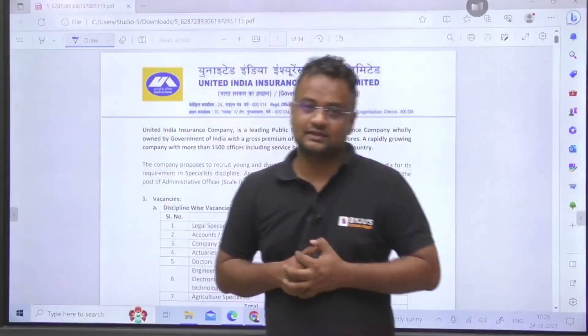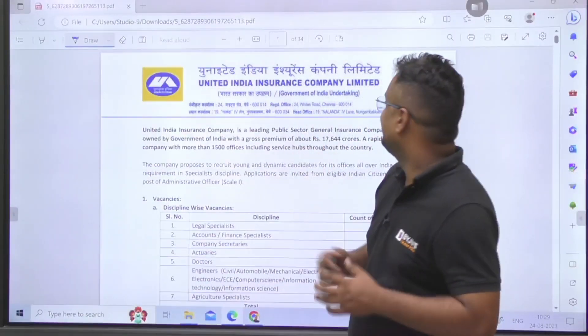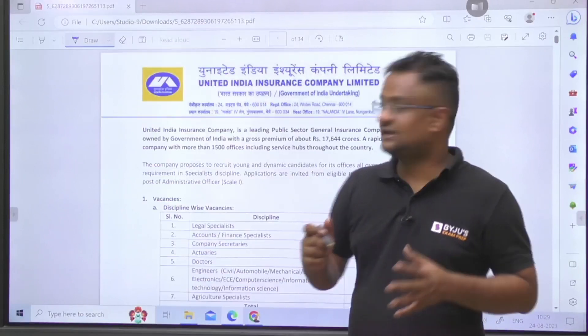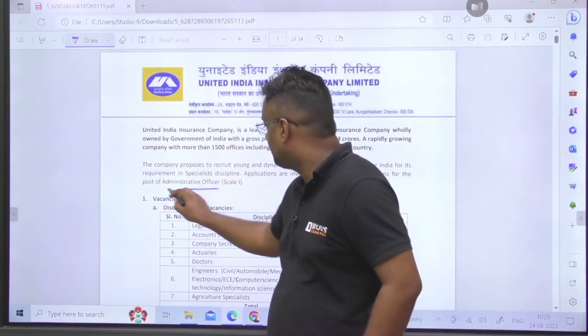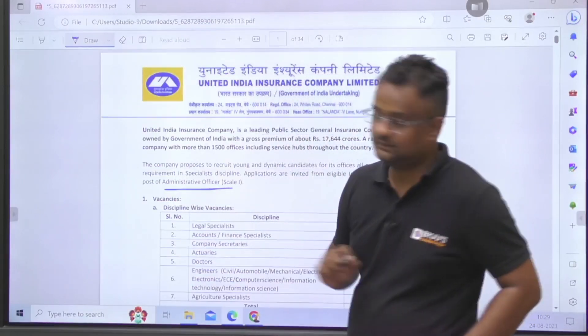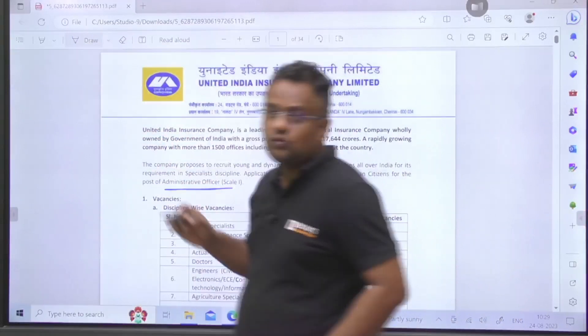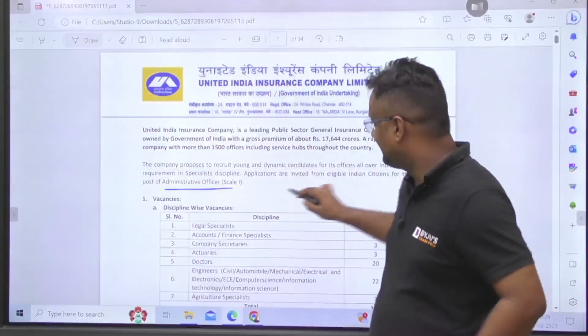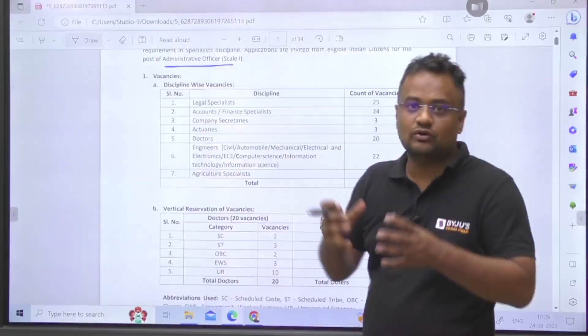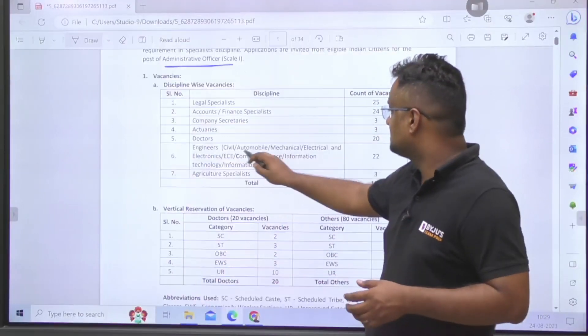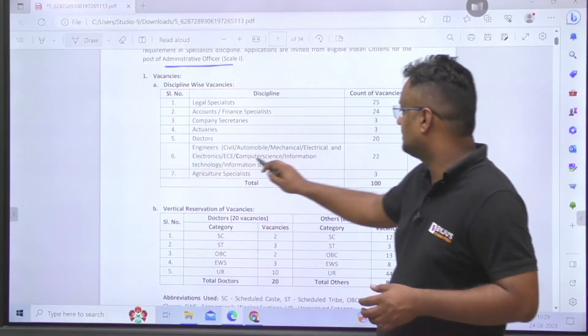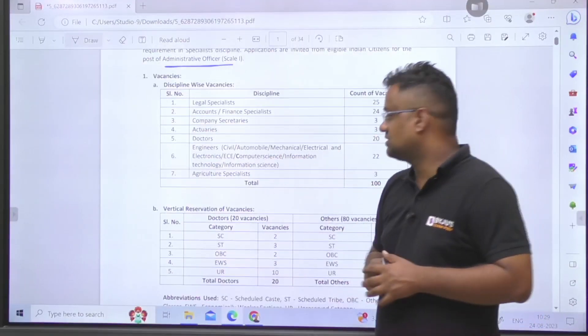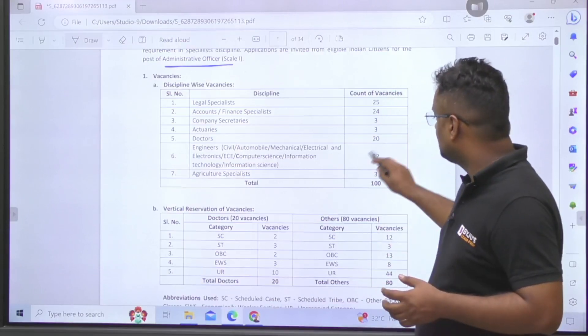Hello dear students, today United India Insurance Company Limited has announced the seats for the post of Administrative Officer Scale One. The post for administrative officer are for various disciplines. Let me concentrate on our area, that is for engineers: civil, automobile, mechanical, electrical, electronics, EC, computer science, information technology.